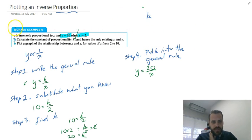So I'm continuing on from the work example from the last video, which was calculating the general rule. Now we know that the general rule is y equals 20 on x.